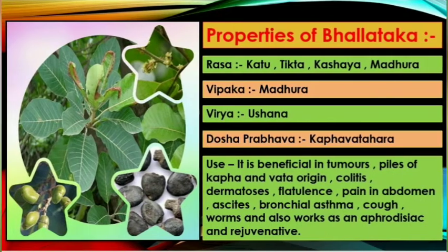Properties of Bhallatak: Ras — Katu, Tikta, Kashay, Madhur; Vipak — Madhur; Virya — Ushna; Dosh Prabhav — Kapha Vata Har.